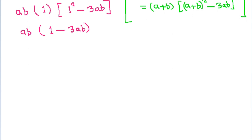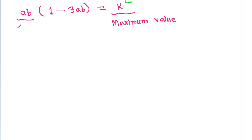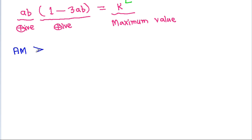Let k equal ab times (1 minus 3ab). We need to find the maximum value of k. Since a and b are positive real numbers, ab will be positive. And for k to be maximized, (1 minus 3ab) should also be positive. We apply AM greater than or equal to GM on the terms 3ab and (1 minus 3ab), because when we add them, 3ab cancels.